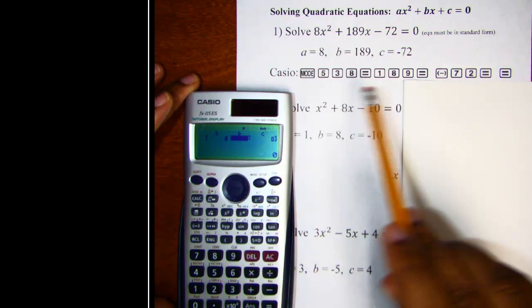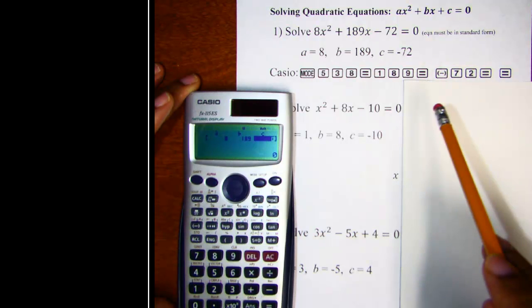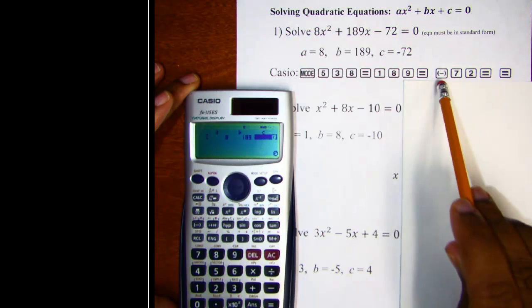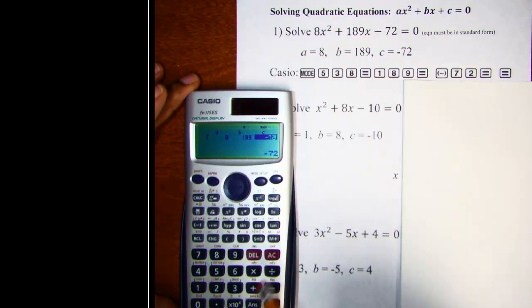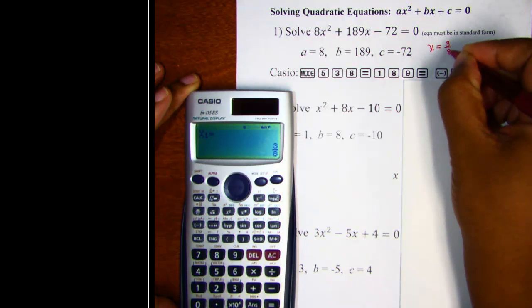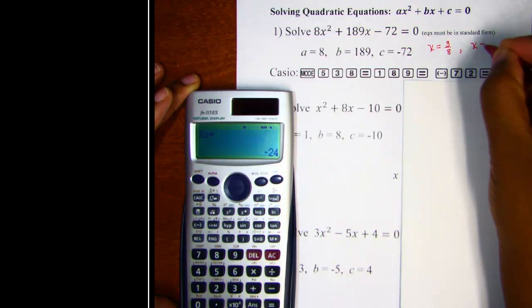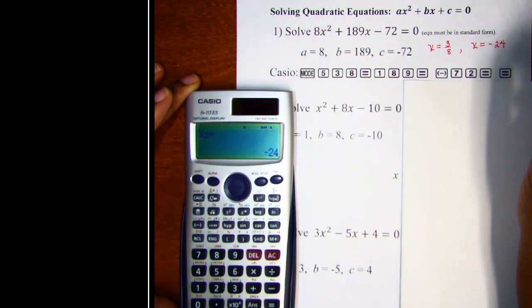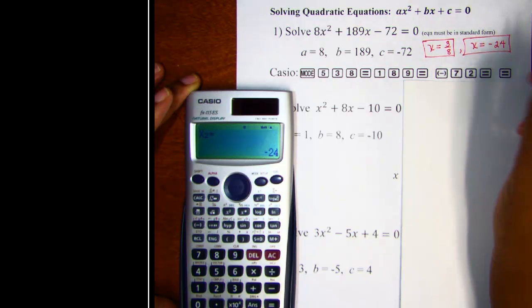It moves to the B position. Our B is 189 so we will enter 189 and hit equals again. And now it's asking for C so we are going to enter in negative 72. So here is our negative key here. So negative 72 equals and now let's hit the equal sign one more time. And our Casio tells us that one x value is 3/8. Hit the equal sign again and we get that the second solution is negative 24. So we see in this case we got two rational solutions.